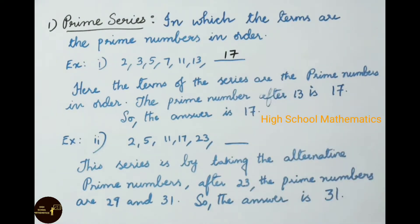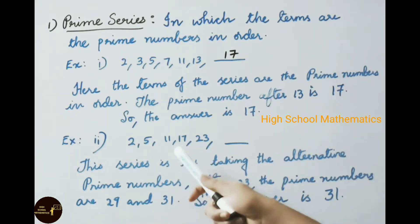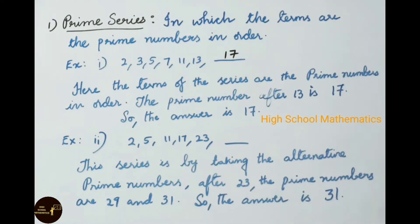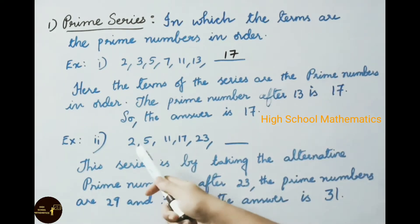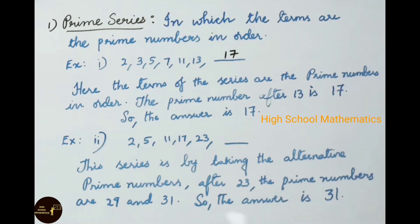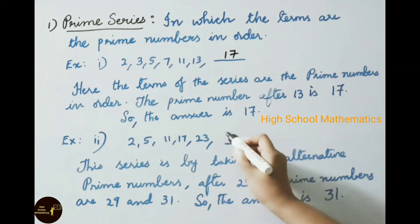See now the second example: 2, 5, 11, 17, 23. If you observe, they have taken the prime number series but alternately. We know the prime numbers after 23 are 29 and 31. So the alternate number is 31. The answer is 31.